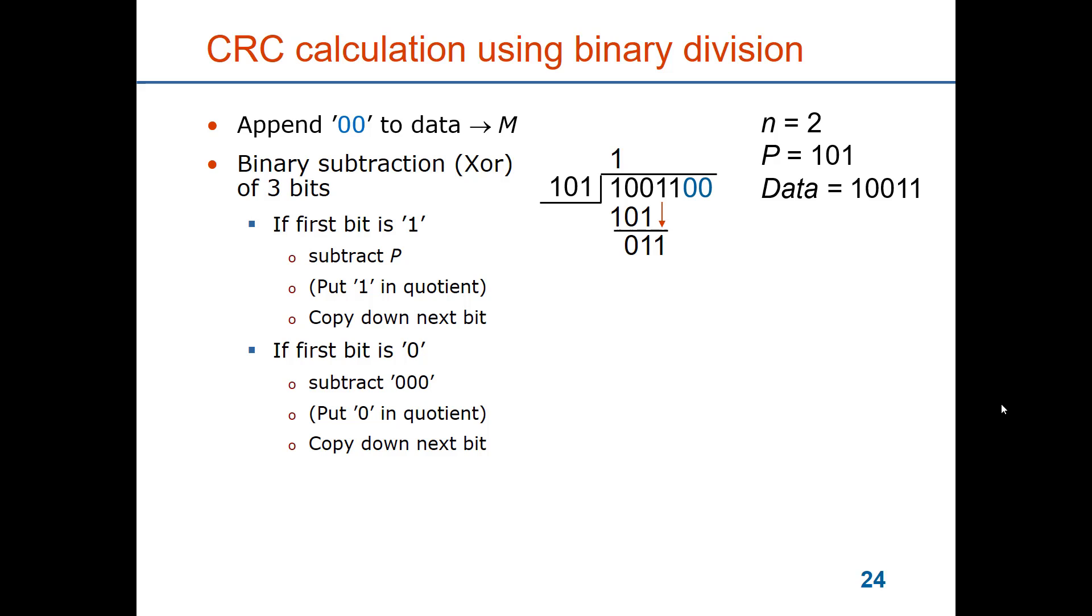So here we have 100, so it starts with a one so we get 100 minus or exclusive or with 101. So the first bit disappears, we have dealt with that one, and then we have zero exclusive or zero which will be zero and zero exclusive or one which will be one. And we copy down the next bit.